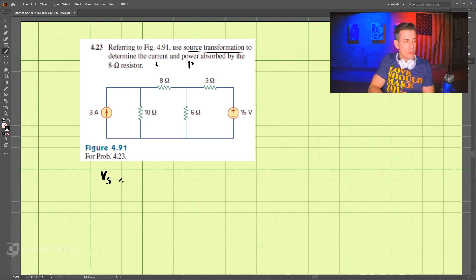If you remember in source transformation, what we have is the voltage source equals the current source times the resistance. That allows us to go from a situation like this to a situation where we have a current source and a resistor in parallel. We can do these two transformations and go back the other way.